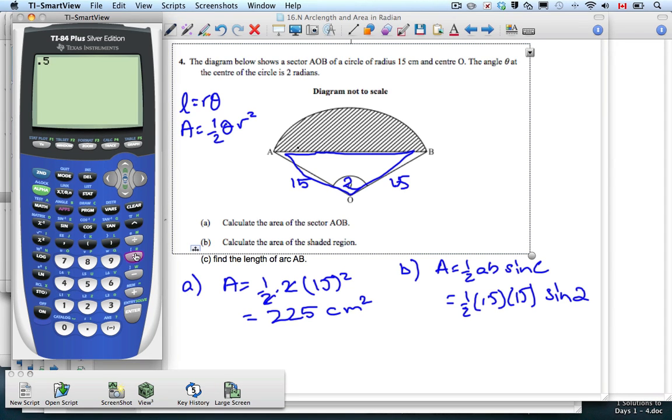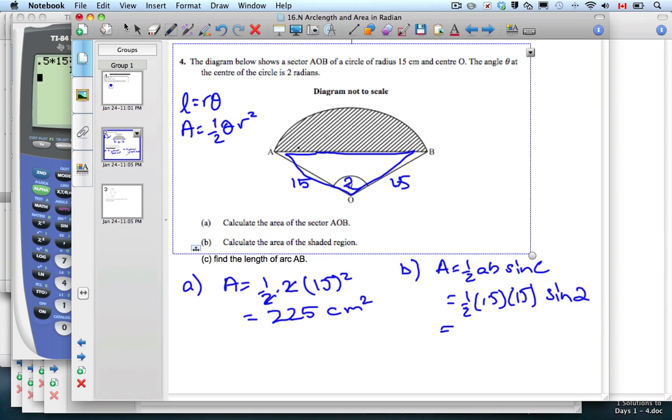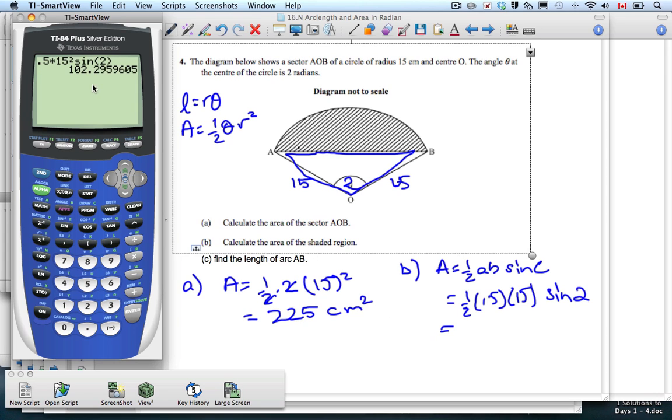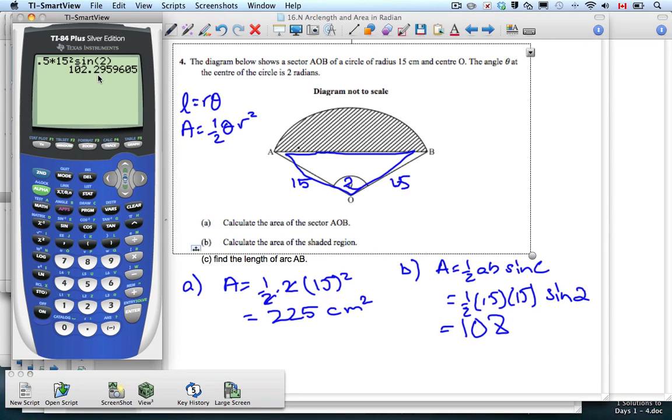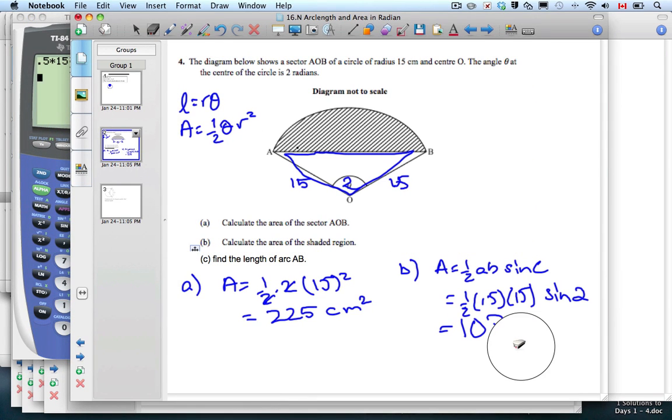So 0.5 times 15 squared times sine of 2. Let's make sure we are in radians. It is in radians, so we are golden. That is, rounded to two significant figures, 102 centimeters squared.